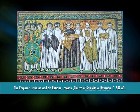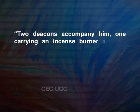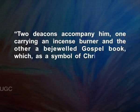Justinian's panel shows Maximianus, the Bishop of Ravenna, leading the procession of the First Entrance. He is wearing a ritual attire — the episcopal stole and a bejeweled cross. Two deacons accompany him, one carrying an incense burner and the other a bejeweled gospel book, which, as a symbol of Christ and the word of God, will be placed on the altar.